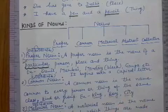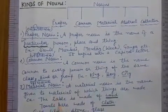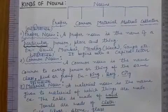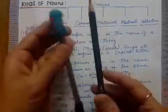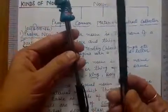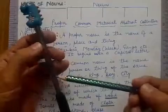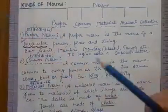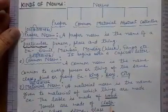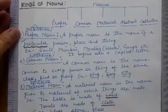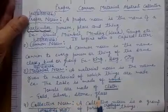Our next noun is material noun. Material noun ko aap log Hindi mein bolte hain padarth vachak sangya. Means koi material — hamari bahut saari things jo hain, mostly sabhi things kisi na kisi material se banti hain. For example, this pencil is made of wood — so wood is our material noun. This pen is made of plastic — so plastic is material noun. Towels are made of cloth — so cloth is material noun. More examples: gold, silver, stone, glass.